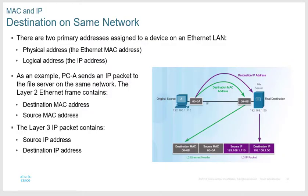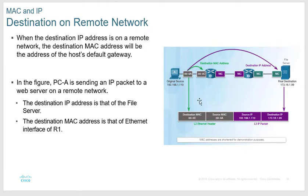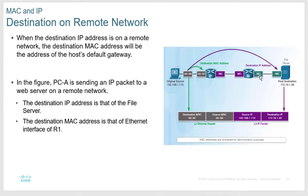ARP only works on the same network — the router always removes that information. When a packet travels from a PC to a file server through two routers, the MAC addressing changes at every router hop. On the first segment it's the PC's source MAC and router 1's destination MAC. After router 2, it's router 2's source MAC and the file server's destination MAC. So the file server always sees the MAC address of the last router, not the originating device.